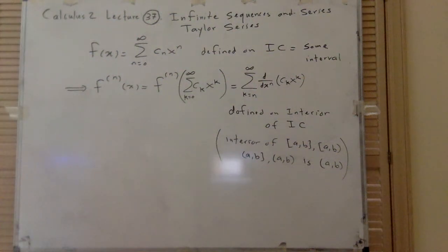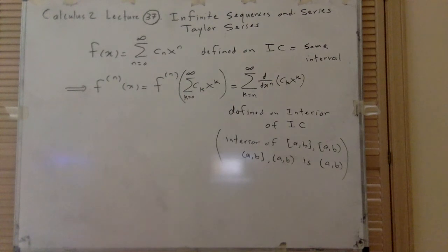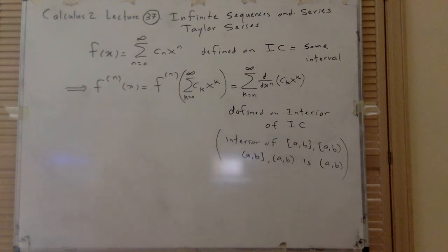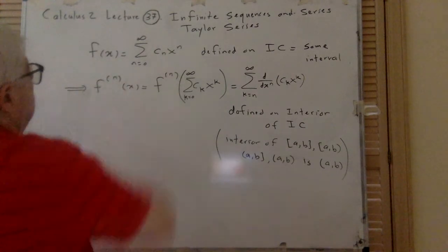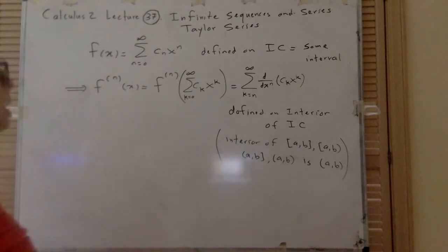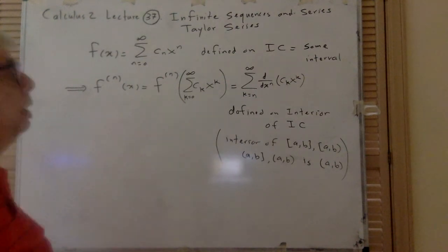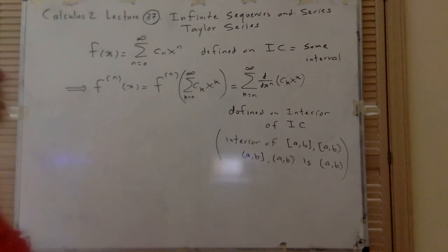Cap 2, Lecture 37: Infinite Sequences and Series — Taylor Series. In the previous lecture, we realized that some functions can have representations as infinite series in the form of a power series. Since the function has a variable x, the power series is in x, and that has some interval which we call the interval of convergence, IC.